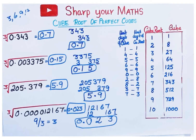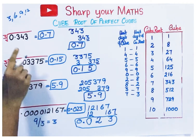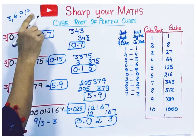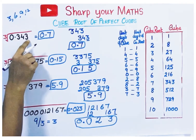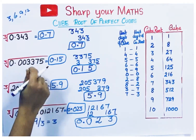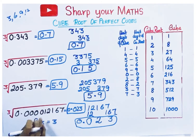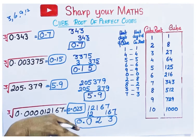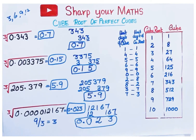This trick is applicable when the number of decimal places is a multiple of 3 — whether it is 3, 6, or 9 — then you can apply this trick to find the cube root.